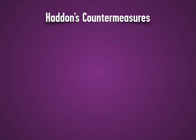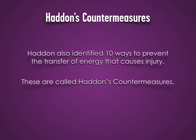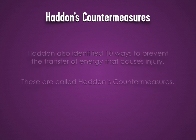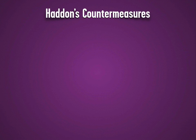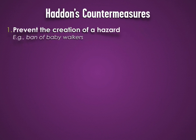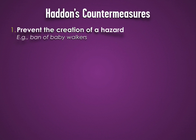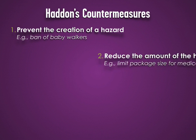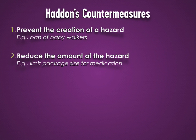Haddon's countermeasures prevent the transfer of energy to the body, which ultimately causes the injury. Countermeasures include: preventing the creation of a hazard, as in a baby walker ban; and reducing the amount of the hazard, as in limiting package size for medication.